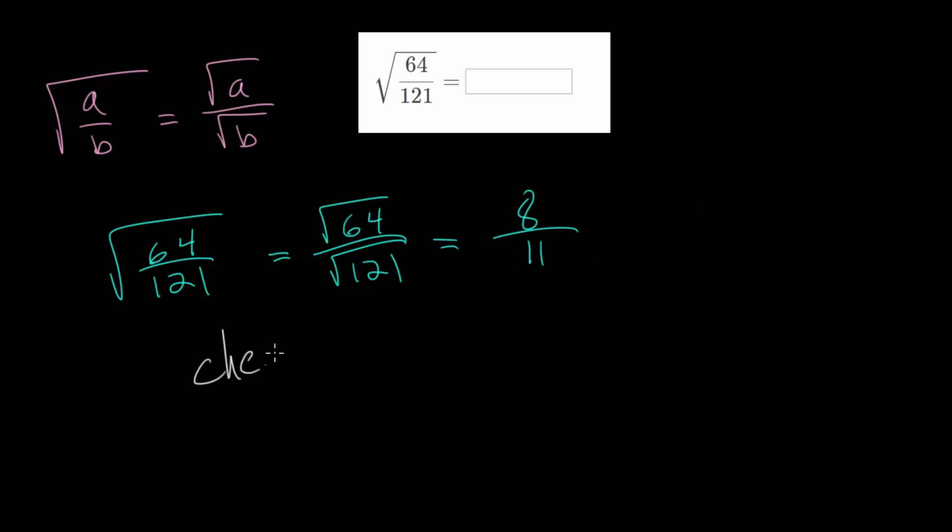Now, these are fairly straightforward to check, since what we think is that this number multiplied by itself gives us 64 over 121. So let's just multiply it by itself, or essentially, let's square it. So we have 8 elevenths multiplied by 8 elevenths. 8 times 8 is 64. 11 times 11 is 121, which is exactly what we expect. So this is our correct answer, which we can put in the box here.